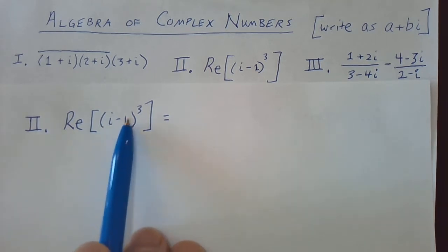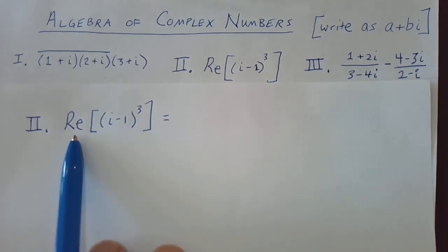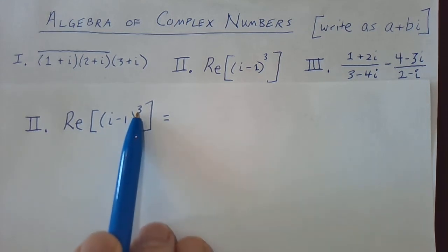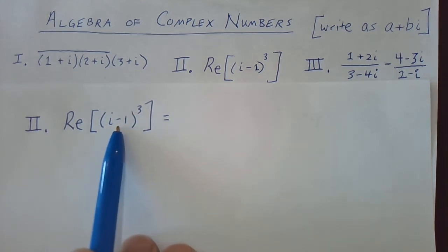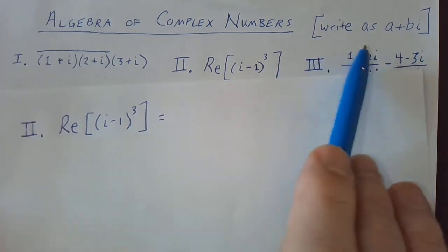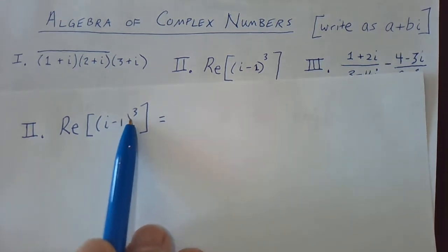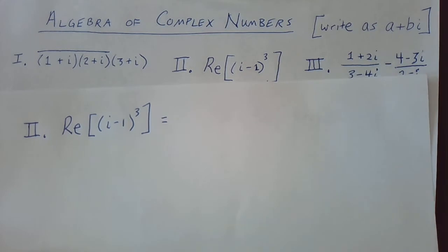Number 2: we're taking i minus 1 cubed and we're taking just the real part of it. So we need to compute i minus 1 raised to the third. Note that i minus 1 is not written in standard form. If I wanted to write it in this form, it would be negative 1 plus i raised to the third.